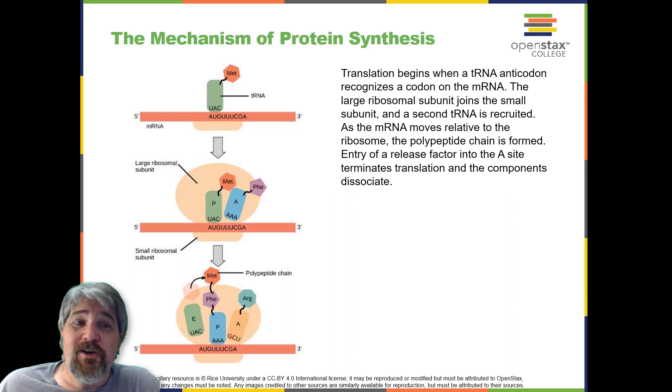The initiator tRNA interacts with the AUG start codon and links to a special form of the amino acid methionine that is typically removed from the polypeptide after translation is complete.